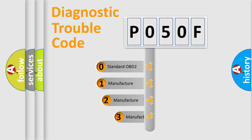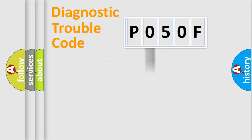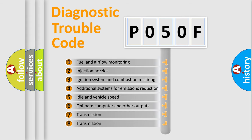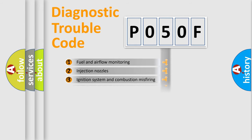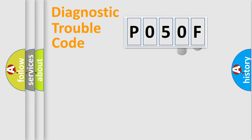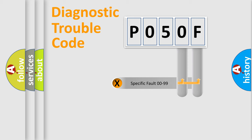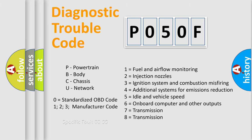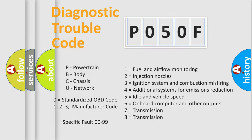If the second character is expressed as zero, it is a standardized error. In the case of numbers 1, 2, or 3, it is a more specific expression of a car-specific error. The third character specifies a subset of errors. This distribution is valid only for the standardized DTC code, and only the last two characters define the specific fault of the group.